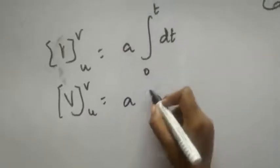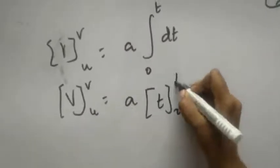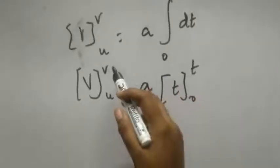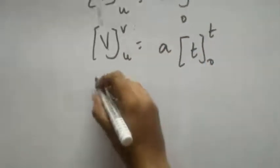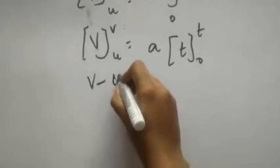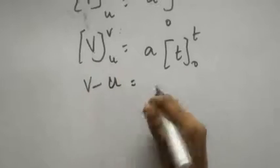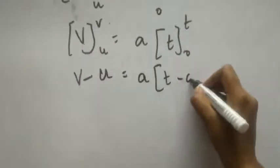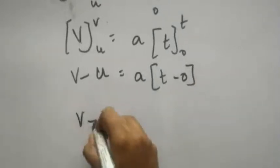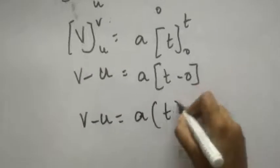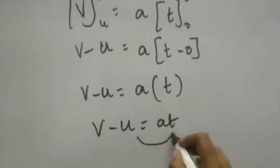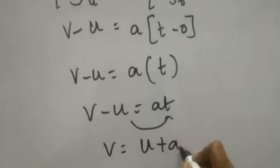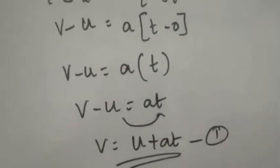The integral of dt is t, with limits 0 to t. Substituting limits — upper limit minus lower limit — we get: v minus u on the left, and a into (t minus 0), which is simply at. So v minus u equals at. Bringing u to the other side gives us v equal to u plus at. This is the first equation of accelerated motion.